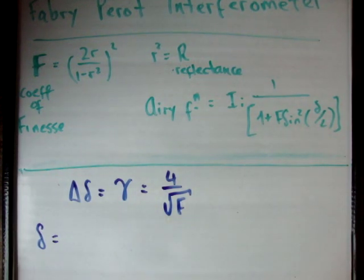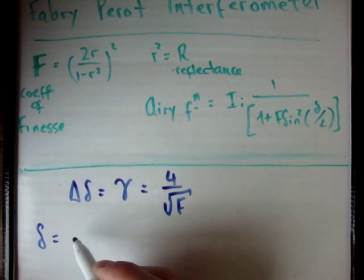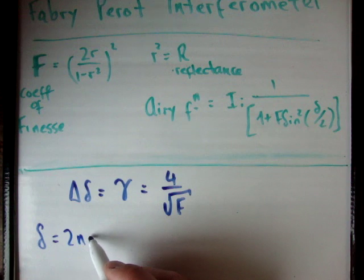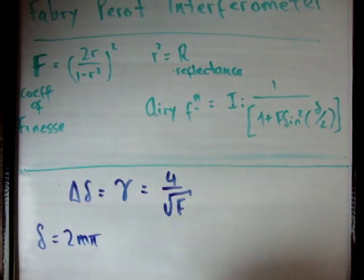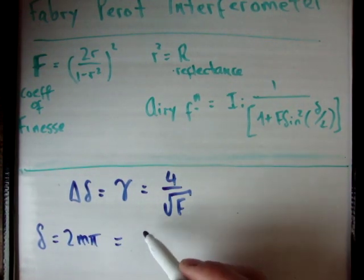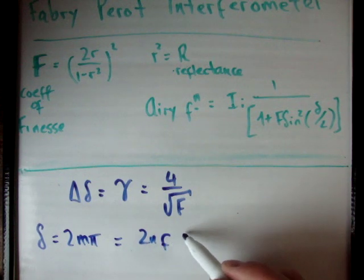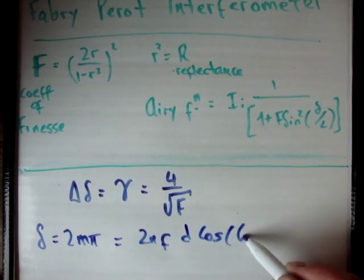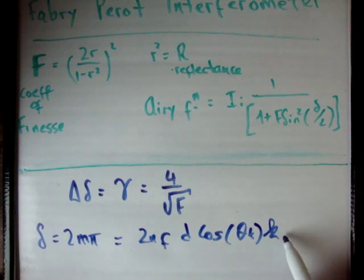Now, you'll know from superposition of waves that the condition for constructive interference is that you must have a path difference of 2m pi. That's going to be equal to 2 n f times d cos of theta t, theta transmitted, times the wave number k.